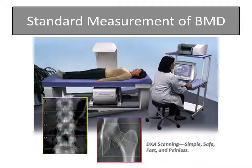Bone spurs, which are common in osteoarthritis, tend to falsely increase bone density of the spine, causing a problem when measuring the spine in older individuals. For standardization, T-score or Z-score are used for evaluation.